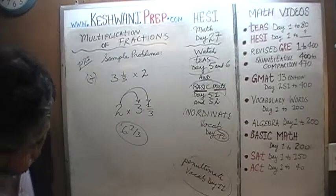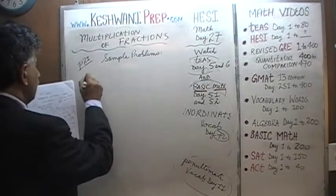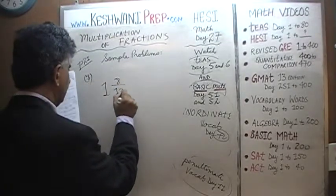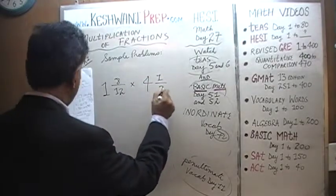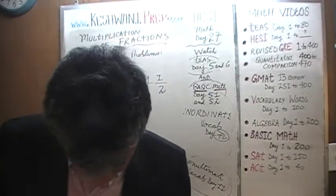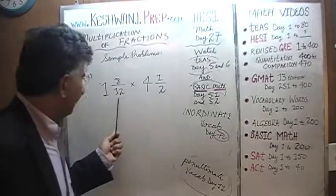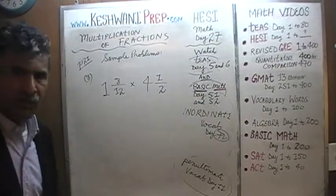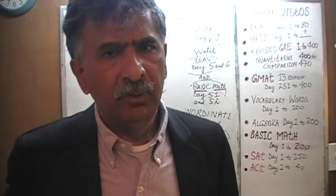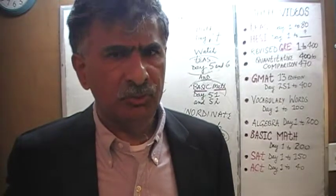Let's do number 8: we need to figure out 1 and 8 twelfths times 4 and a half. Before you dive into the problem, see if there is any estimation you can do. You need to have some gut feeling as to what you are looking for. Sometimes that's enough to locate the right answer, because nobody is asking you to actually solve the whole thing — you simply have to recognize one of the four answer choices as the right answer.